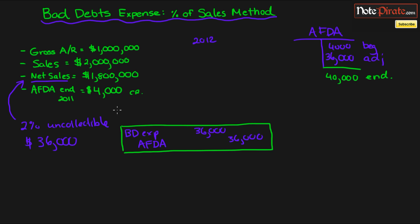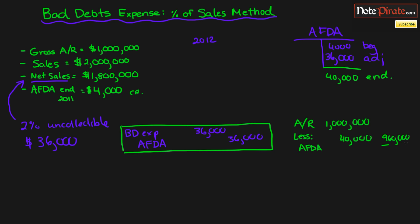Now look at your gross accounts receivables, since we'll usually be asked to prepare the receivables section of the balance sheet. Accounts Receivable is $1,000,000. Write the contra account — AFDA — right underneath it, since contra accounts always sit next to the account they apply to. You'll write $40,000 there, giving you $960,000 as your net realizable value for receivables. You now have the net realizable value, the AFDA balance, and the adjustment if any of those three things are asked for.